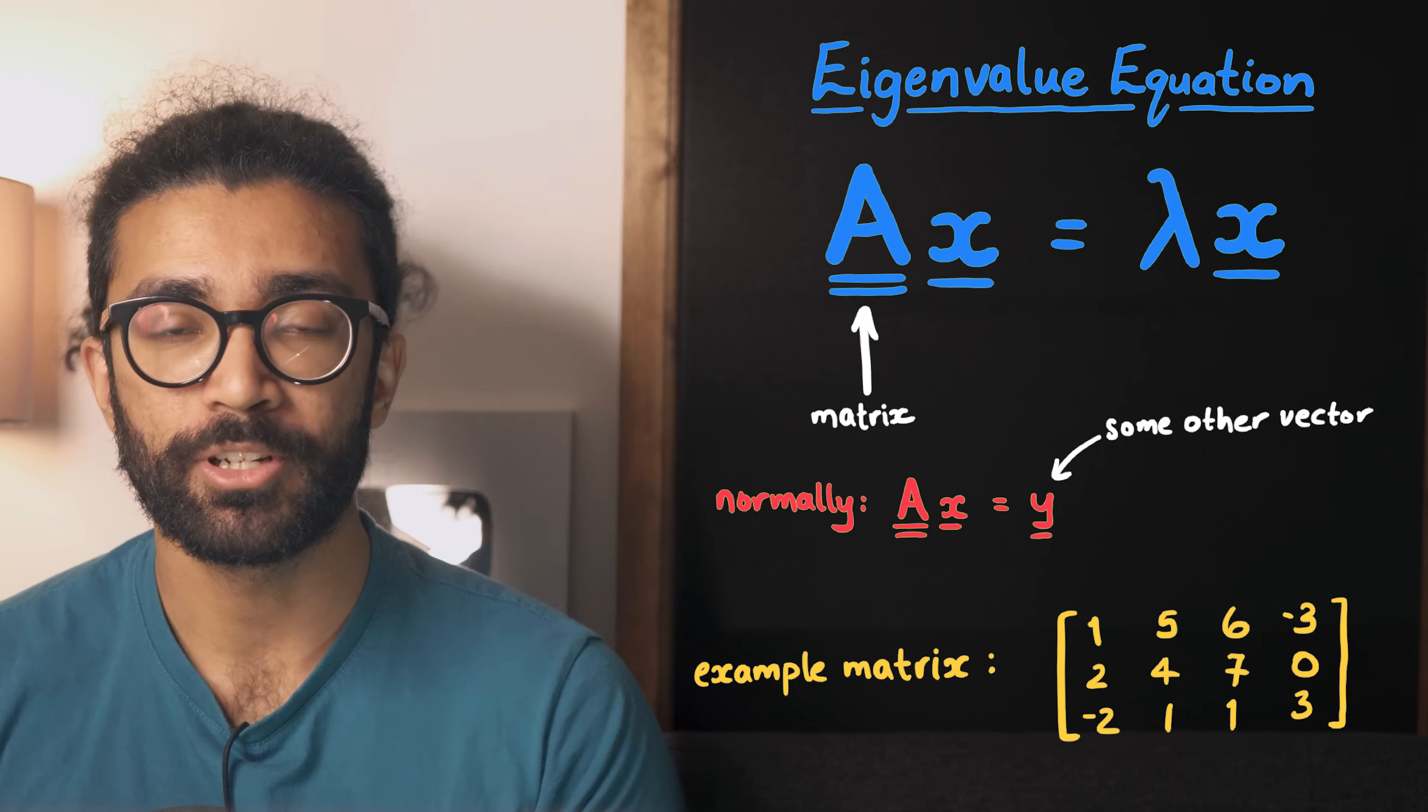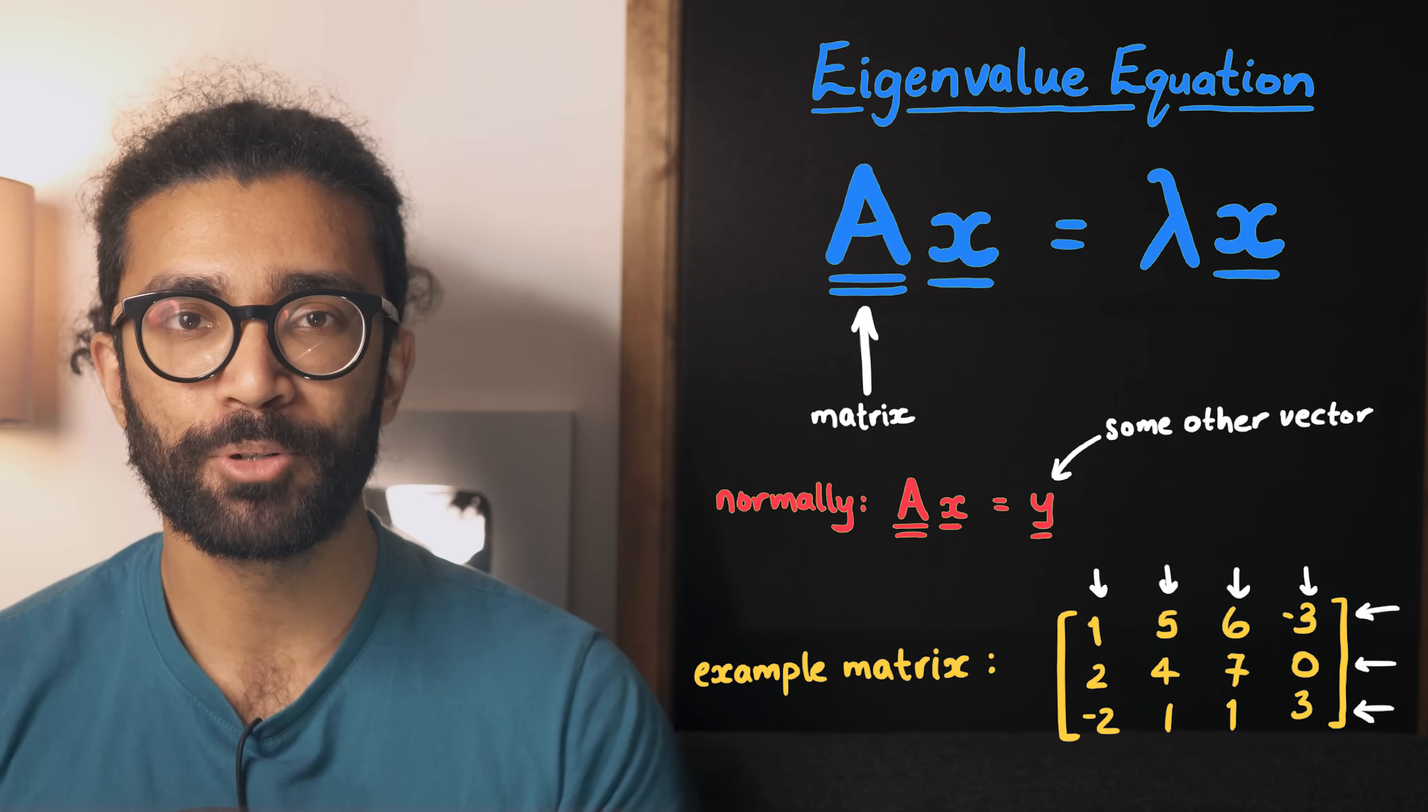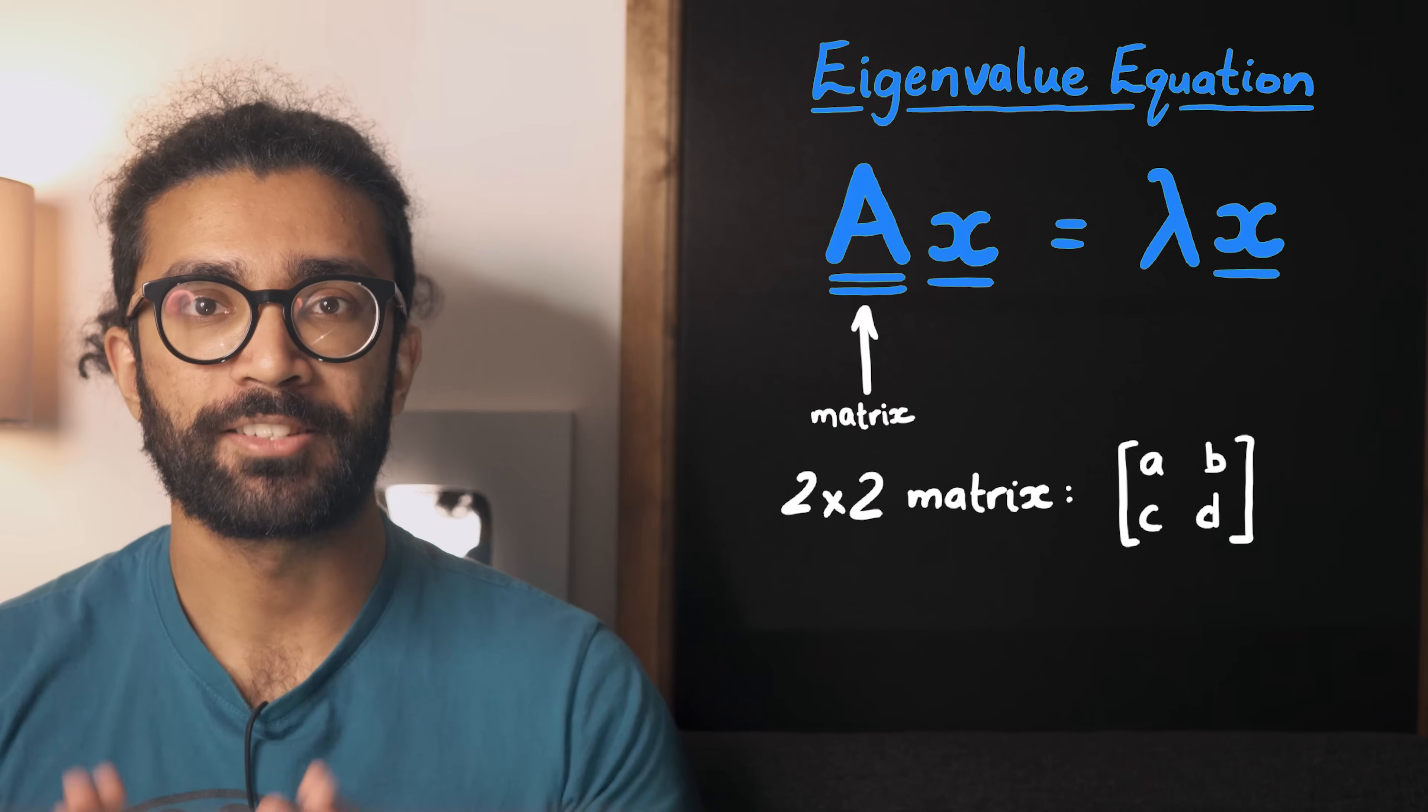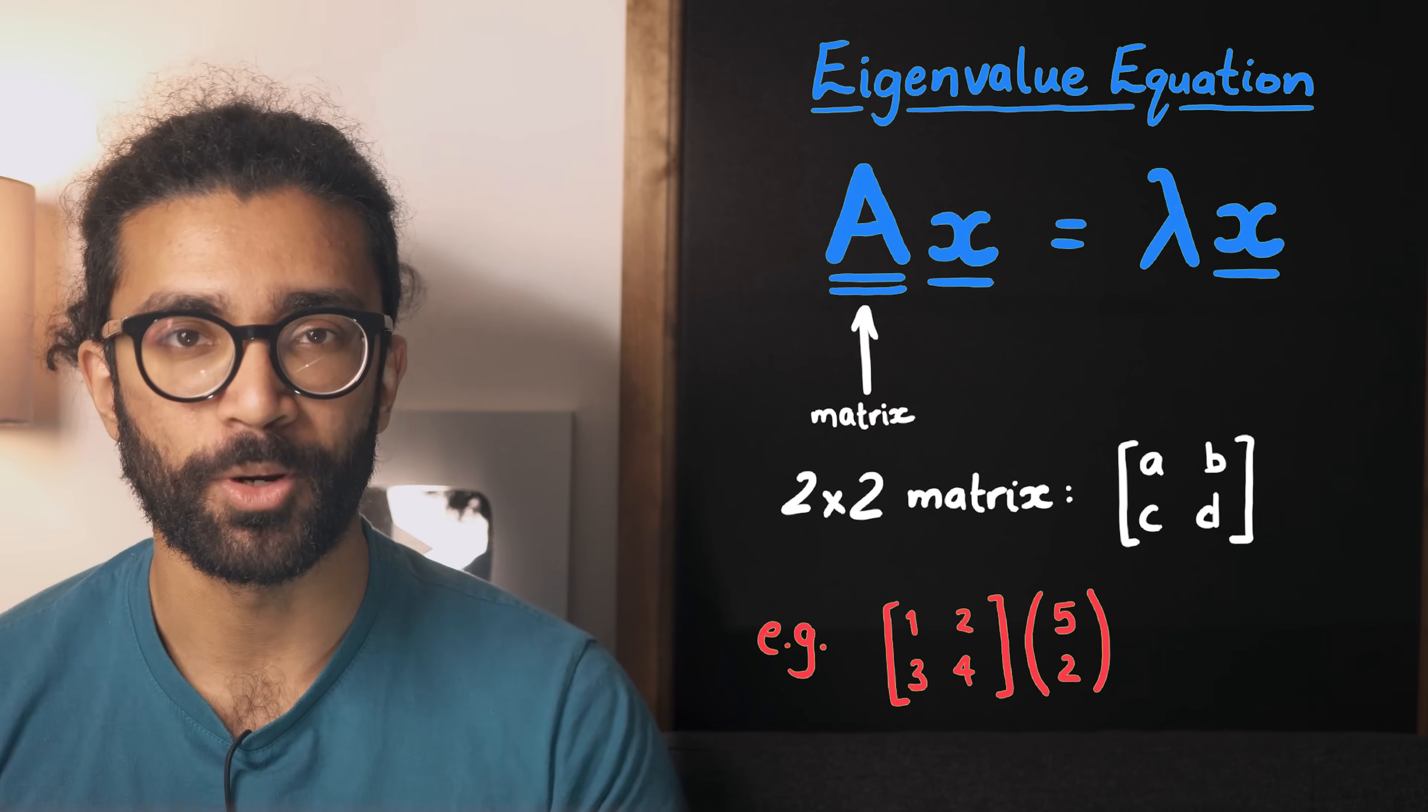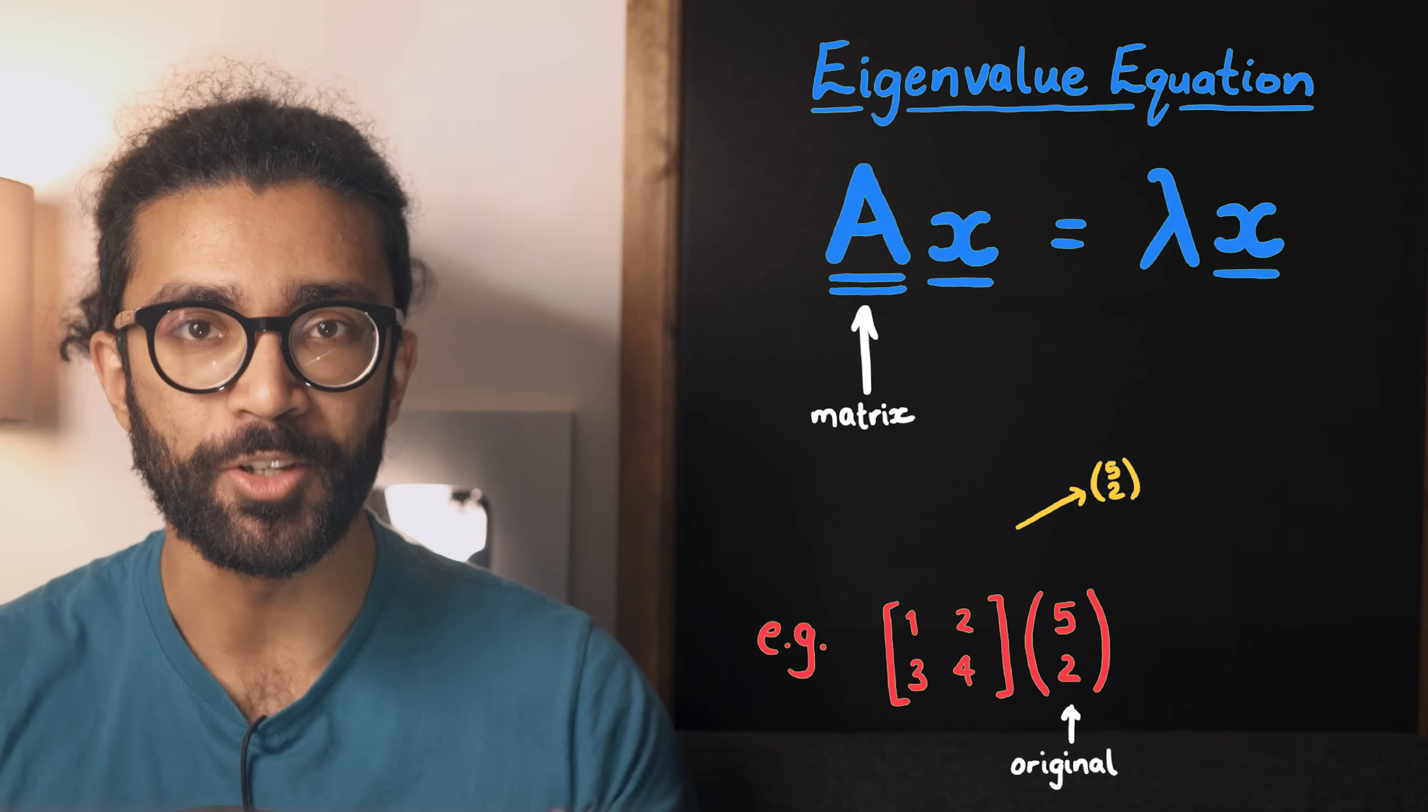If you're unfamiliar with matrices, they're essentially just a set of entries with a fixed number of rows and columns. For now, to keep things simple, we'll just consider two-by-two matrices. These can be thought of as transforming our original vector in some way. If you know about matrix multiplication, then have a go at this one. We can see that the vector we started with gets transformed into this new vector.